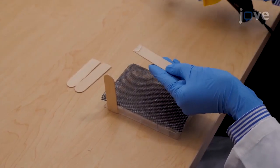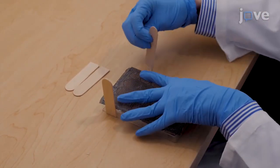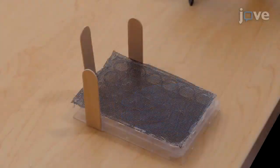Then use the hot glue gun to secure a wooden craft stick to three sides of the culture plate. Prepare as many plates as can fit in the filming chamber.